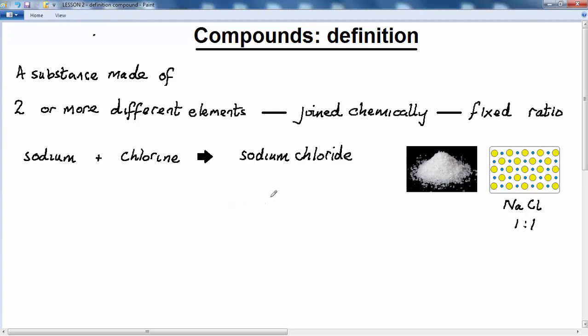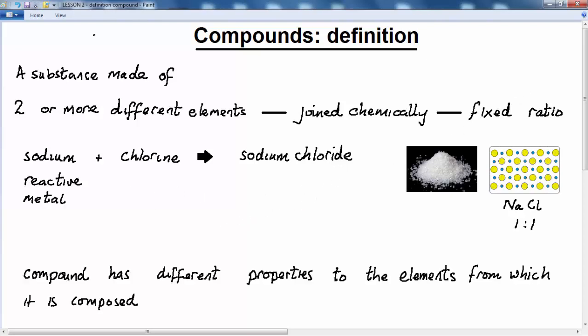One thing we can always say about compounds is that their properties, both chemical and physical, are always different from the properties of the elements from which they're composed. For example, sodium is a very reactive metal while chlorine is a highly toxic gas.